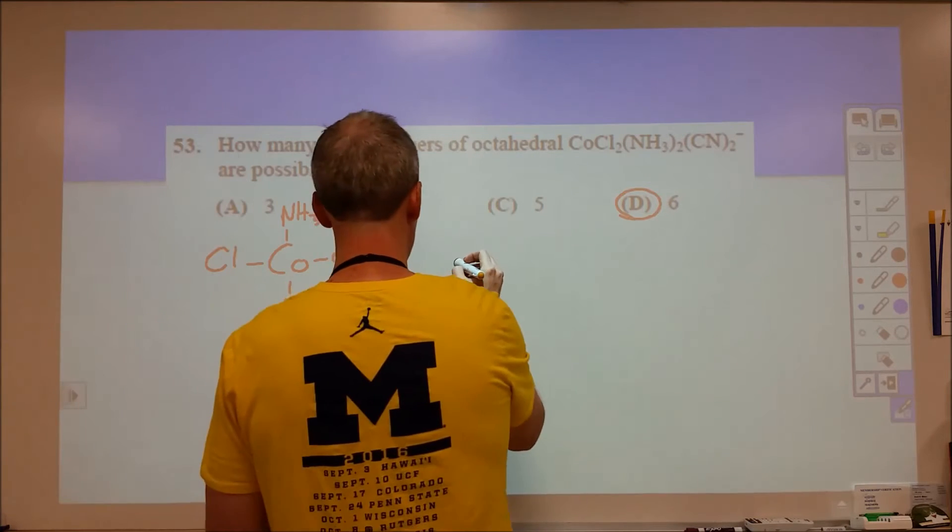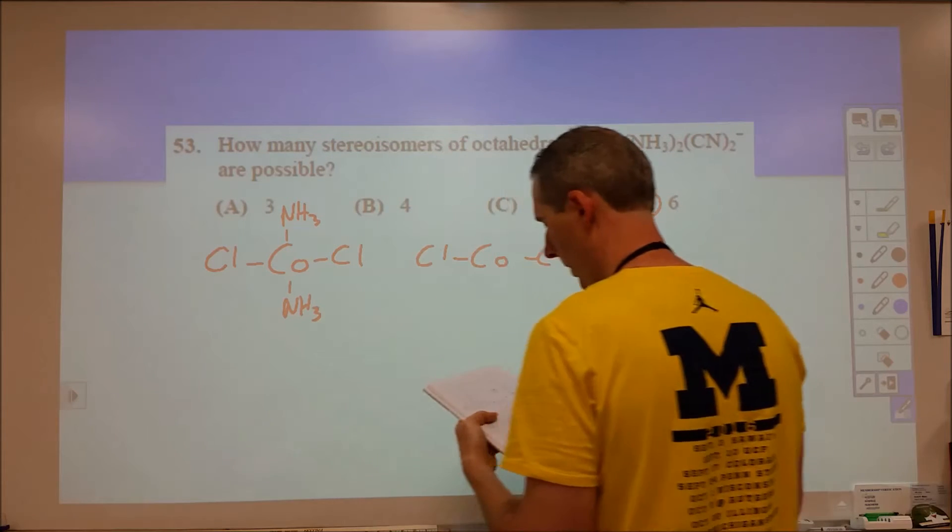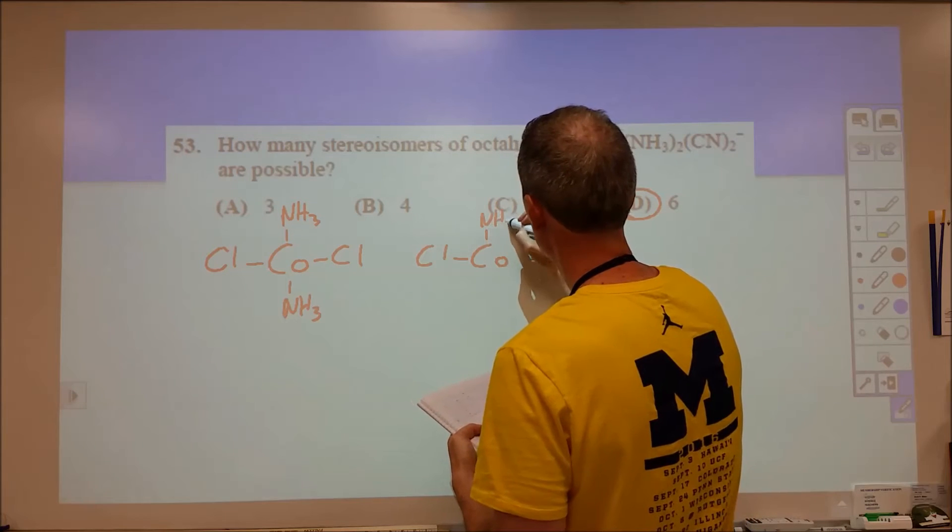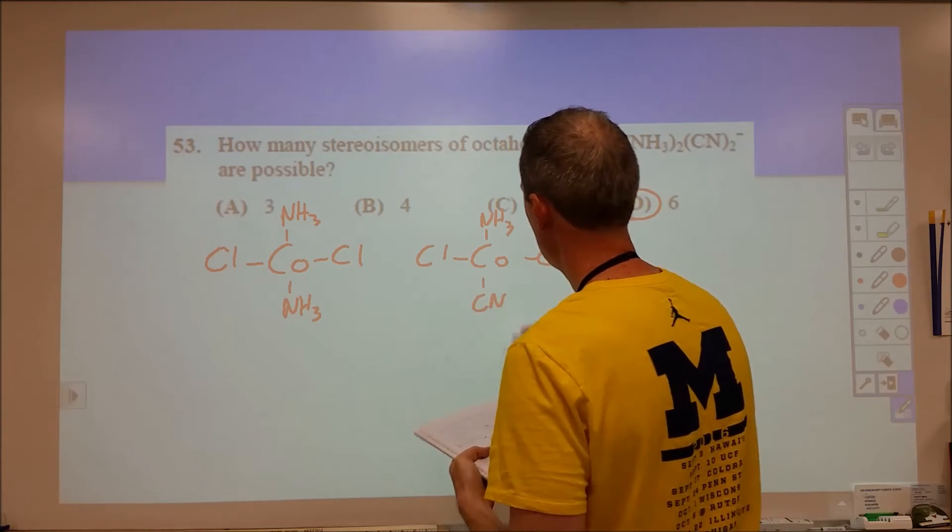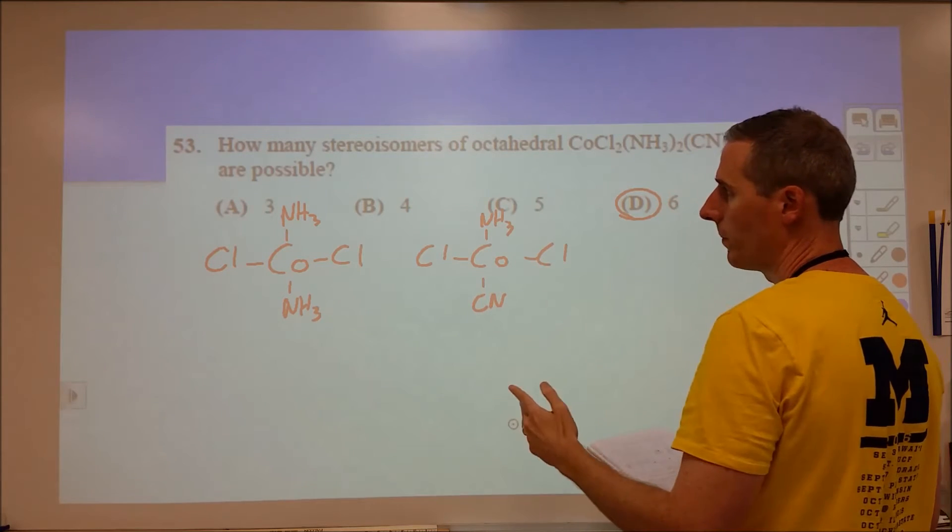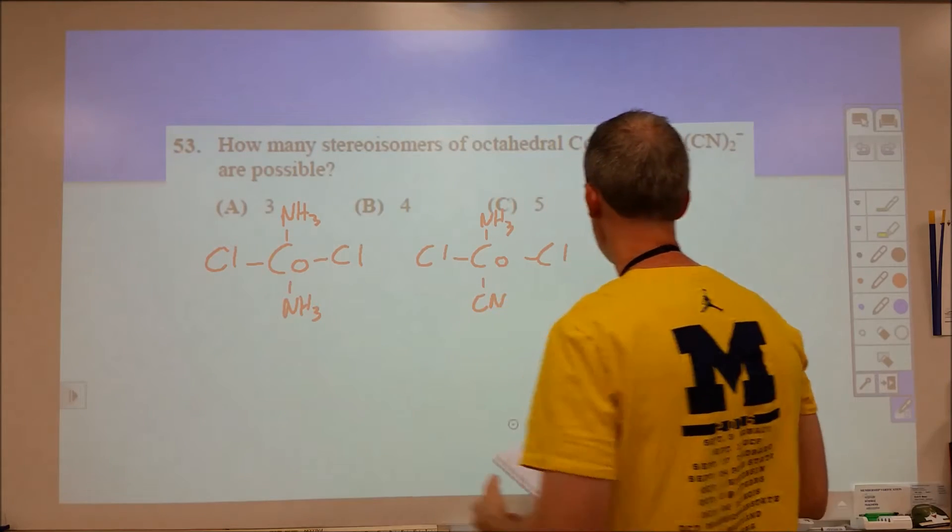Then we could also do the cobalt to the chlorine to the chlorine in an axial kind of position. And we can set up where we have ammonia on one side, a cyanide on another, and then a cyanide in one way and an ammonia in the other way. So these would be different from one another. In this one, the cyanides are both coming in.